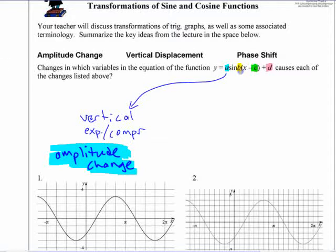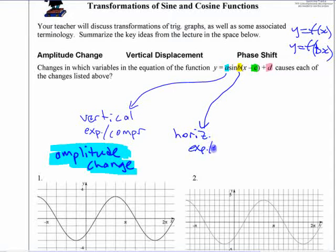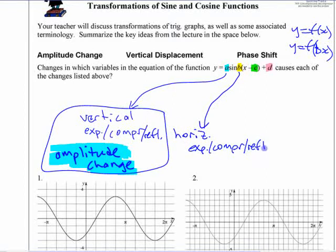What does the second thing do here, the value in here, this B value here? What does that do? When you change y equals f of x to y equals f of b times x, what does that do? Horizontal expansion or compression. Horizontal expansion, compression. Technically, if it was negative, it could also be a reflection. So I should have put over here reflection, and I should put reflection here as well.